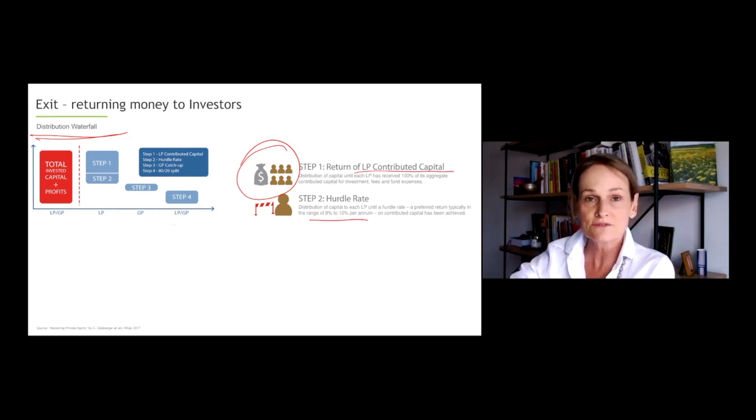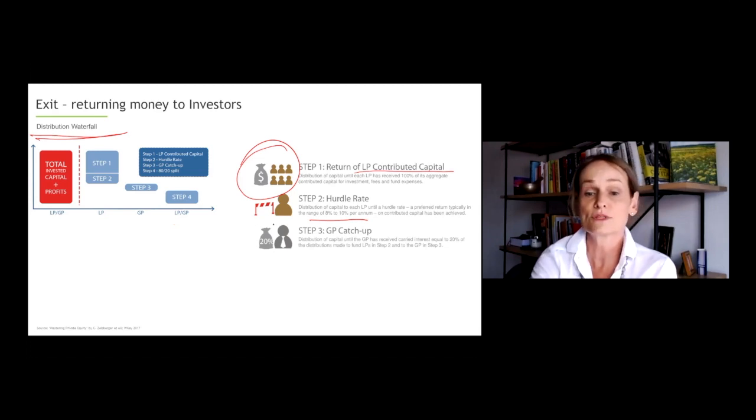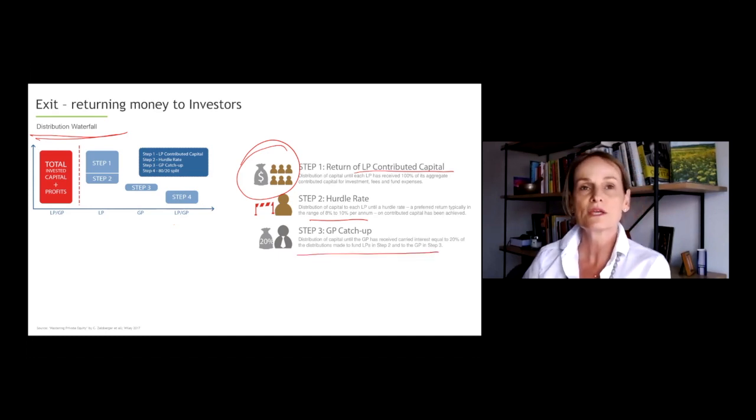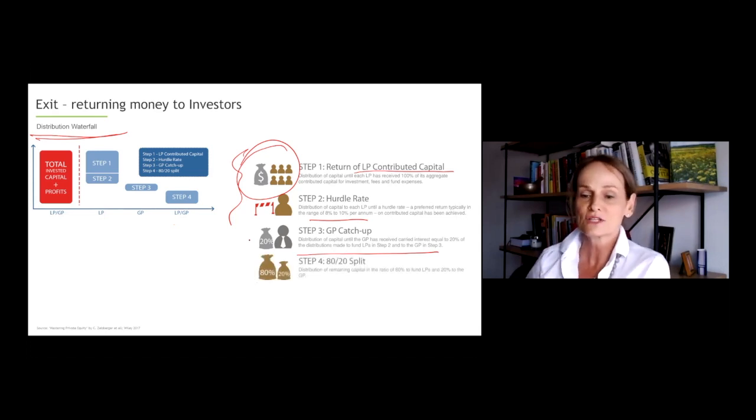We then will pay to the LPs a hurdle rate, meaning a preferred return. So before the GP receives its carry, its profit sharing, the LP will need to receive a hurdle rate, usually between eight and 10%. Then in step three, again, always assuming that there's still funding available, the GP will play catch up, meaning the GP will receive everything that pro rata that the LP has received in step one and two. And once there's more funding left, we will ultimately split all the remaining proceeds from an exit 80-20.